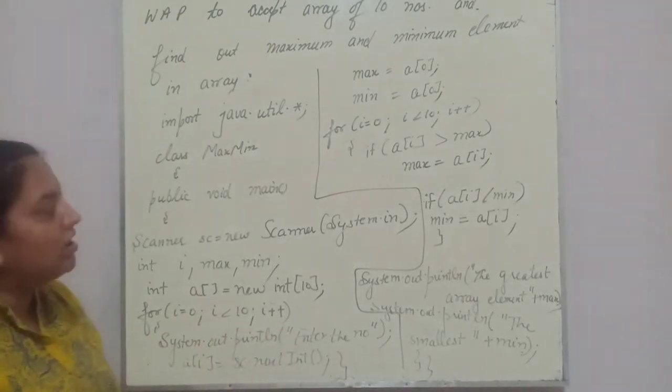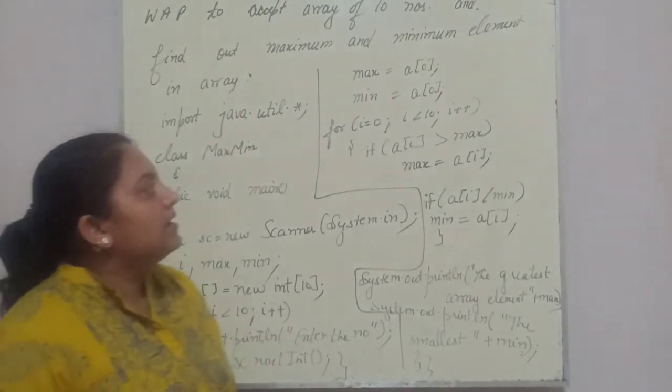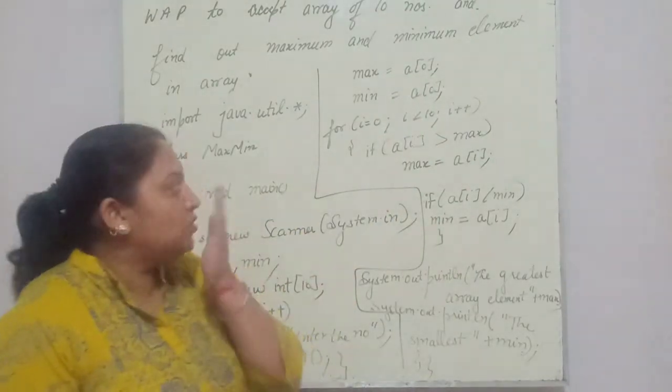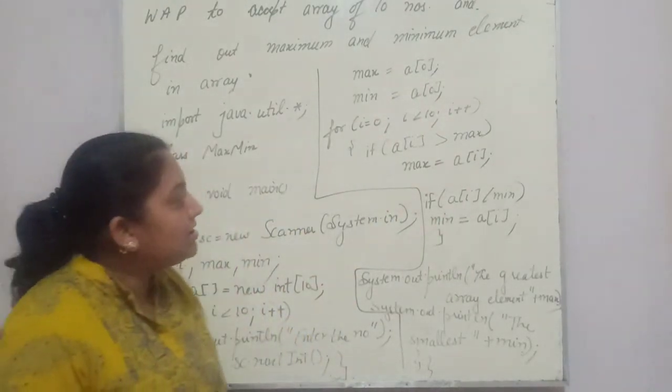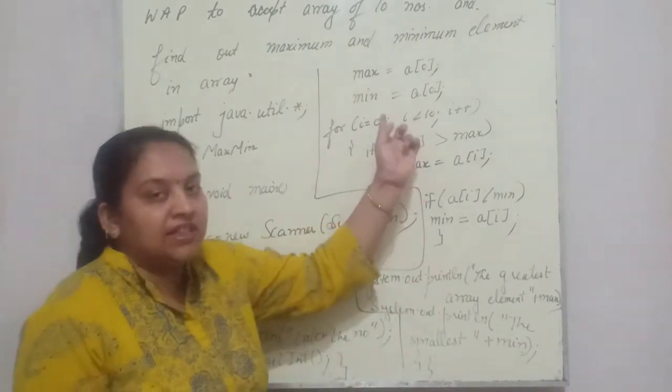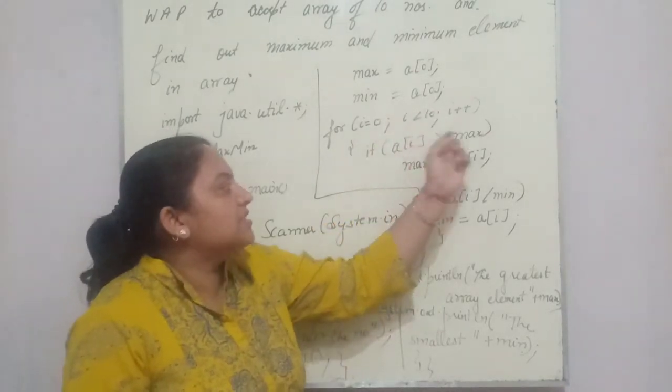a[i] = scanner.nextInt(). Then maximum and minimum I have assumed a[0]. Here I told you in the logic, then I will compare with the help of loop. If a[i] is greater than max,